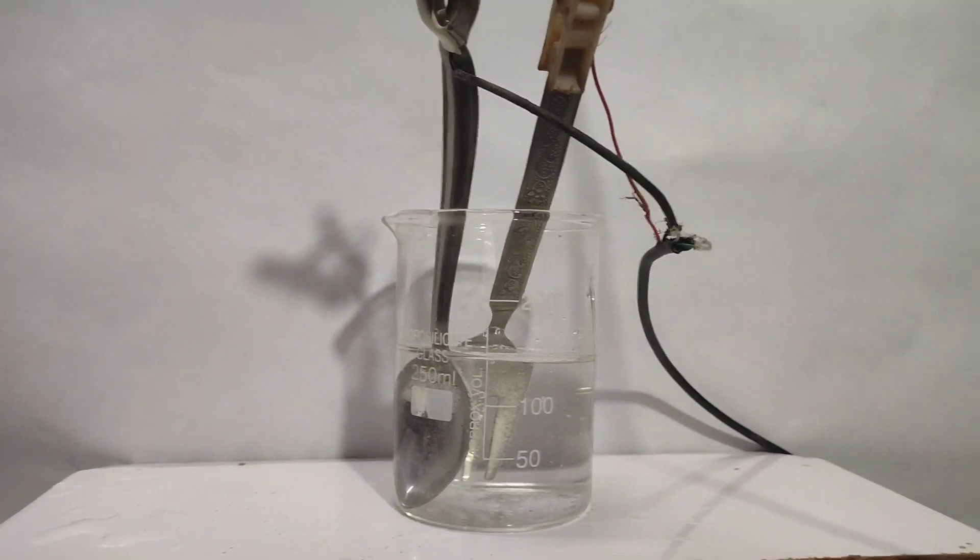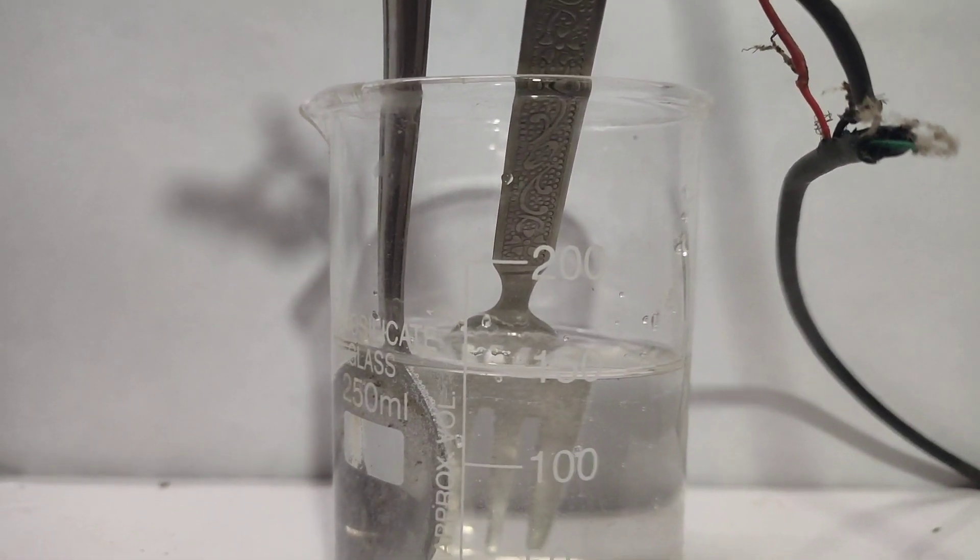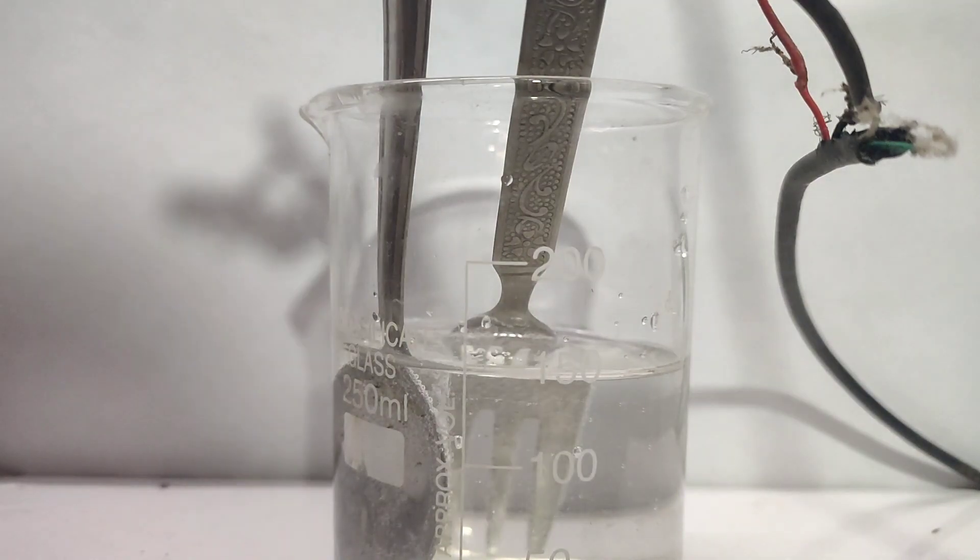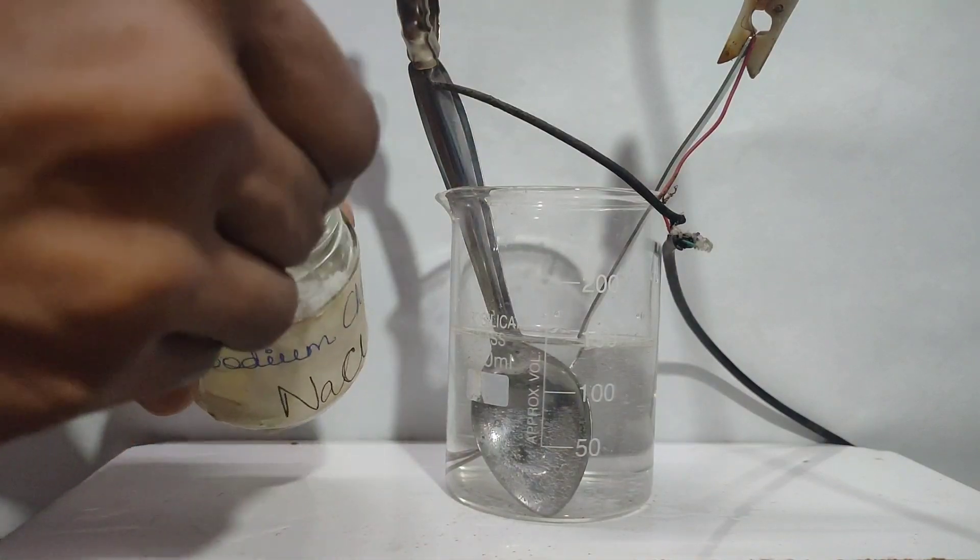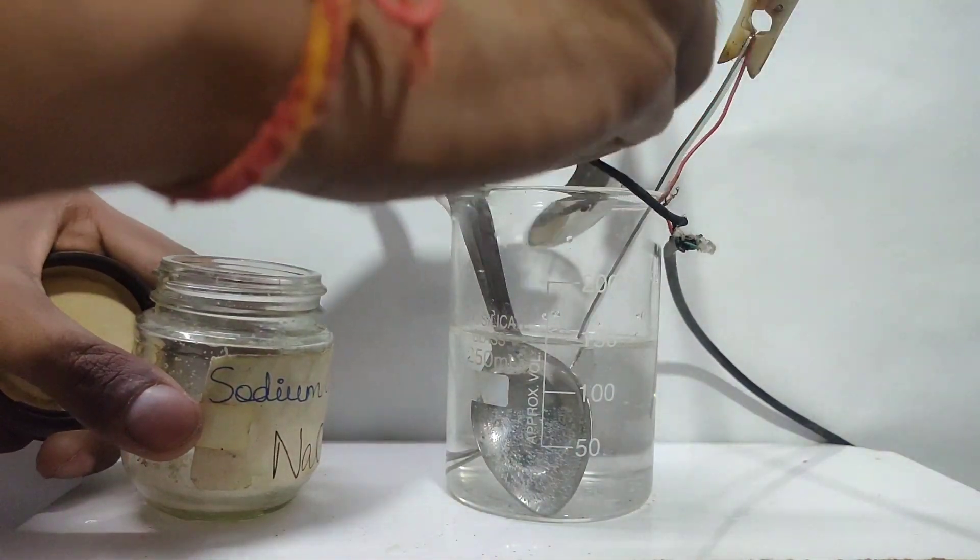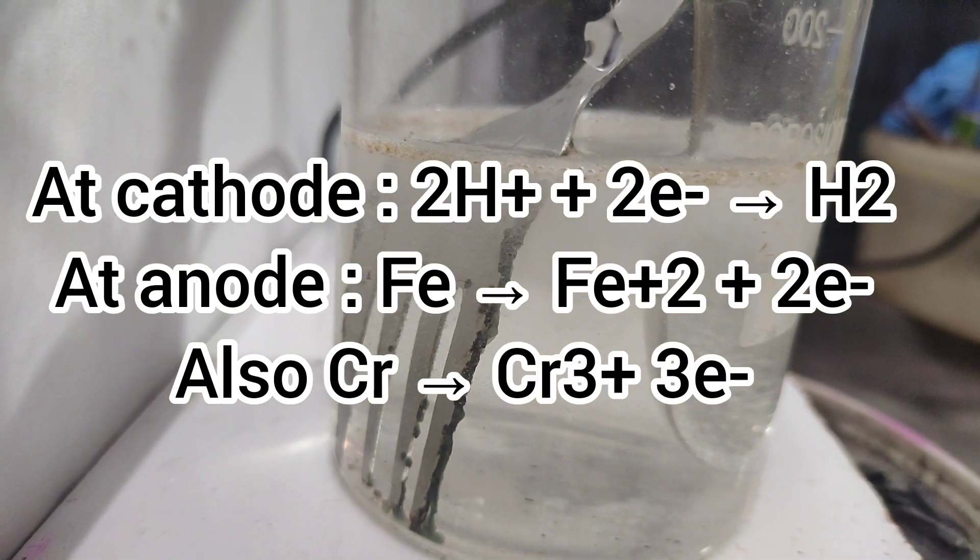I took a fork and a spoon, immersed them in the solution and connected to an 18 watt AC to DC adapter. Electrolysis started but no corrosion of anode was happening, so I am adding one spoon of sodium chloride. On adding sodium chloride, anode starts to corrode.